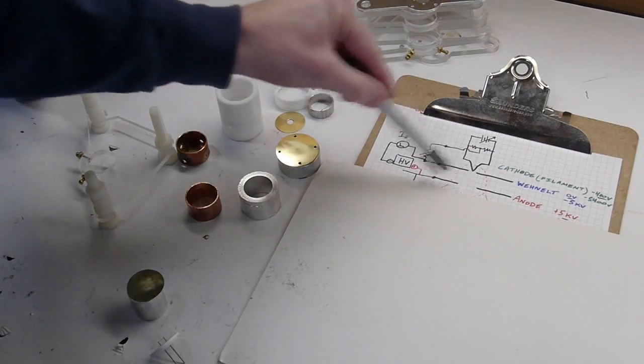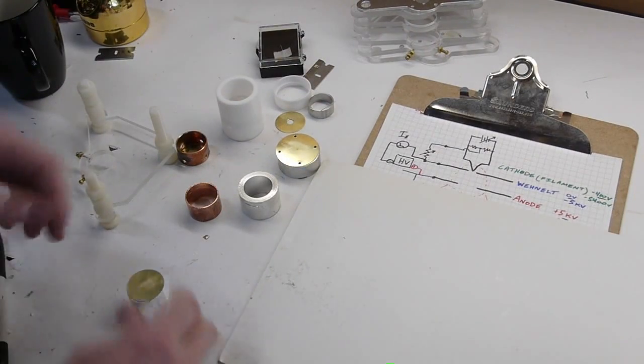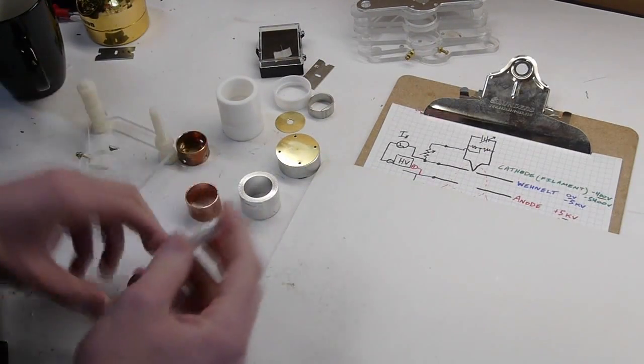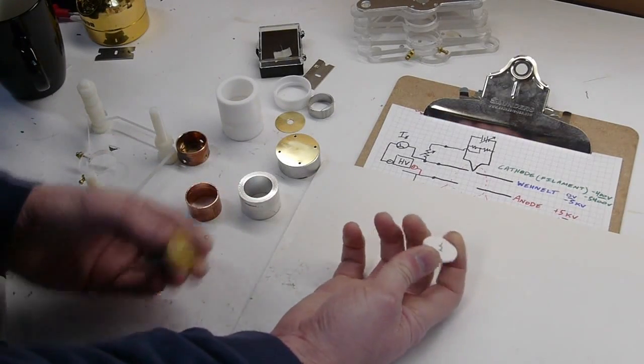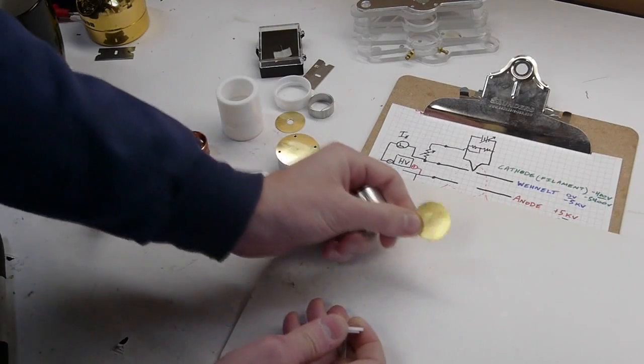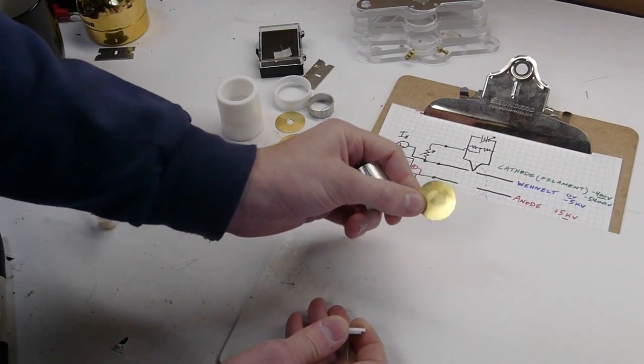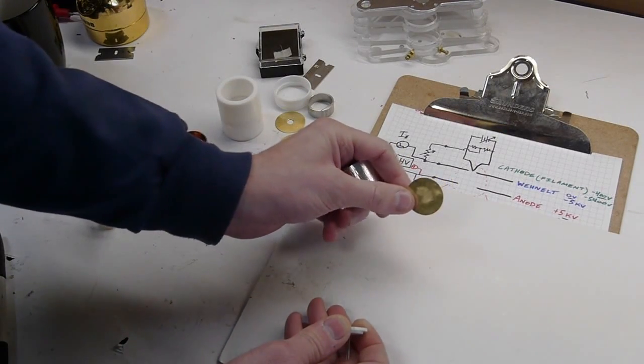So let me put these pieces out here, the actual pieces. This is the filament, the Wenelt cup or Wenelt cylinder. In my case it's just a flat plate with a hole in it, a very small hole.